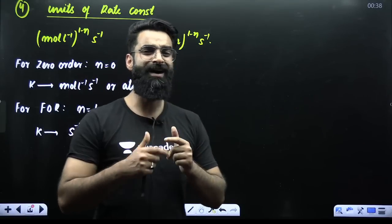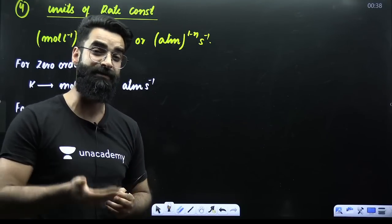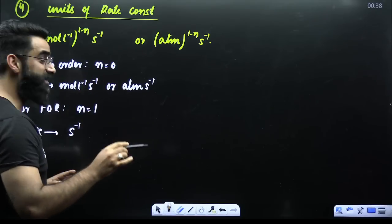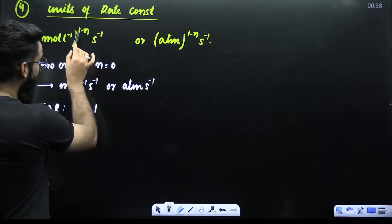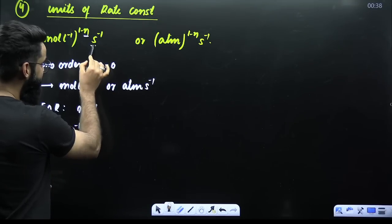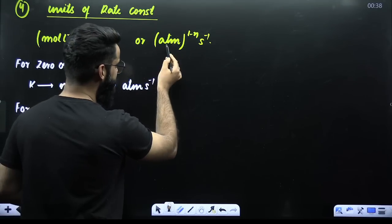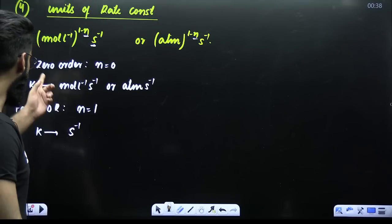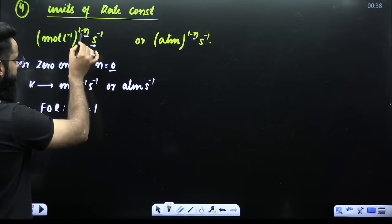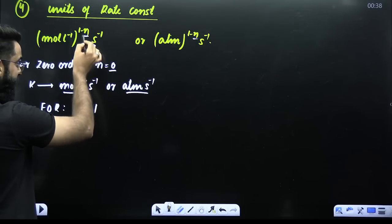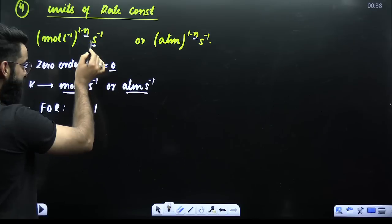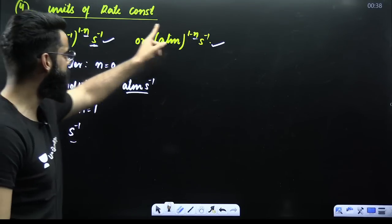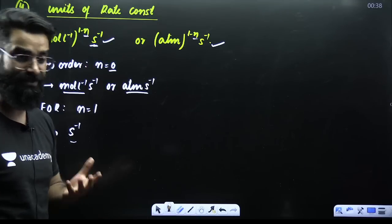Concept number 4: sometimes you'll be asked for the rate constant of zero, first, or second order reactions. In general, the rate constant unit is mol/L raised to power (1−N) per second, where N is the order of the reaction. If pressure is in ATM, it becomes ATM raised to (1−N) per second. For zero order (N=0), first order (N=1) gives units of s⁻¹ since 1−1=0. For second order (N=2), substitute accordingly to get the unit.